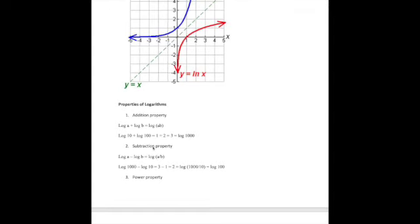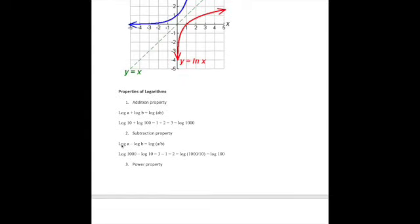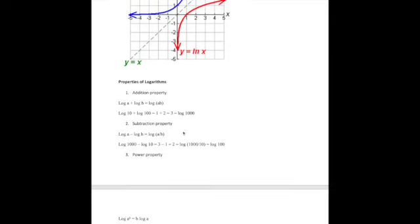The subtraction property, similar to what we see in exponent, when you subtract things together, it's the same as doing a division. So if we do log of A minus log of B, it's the same as taking log of A divided by B. So here that example again with log of 1000 minus log of 10, log of 1000 is 3, log of 10 is 1, so 3 minus 1 is equal to 2. But you can also say that log of 1000 minus log of 10 is the same as log of 1000 over 10, which is log of 100, and log of 100 is also 2. So that shows you an example of that particular relationship.